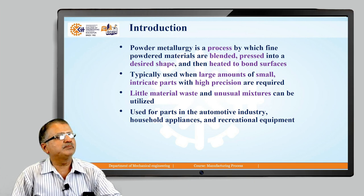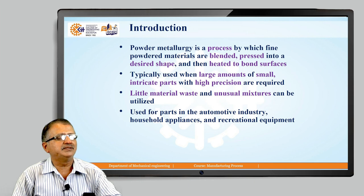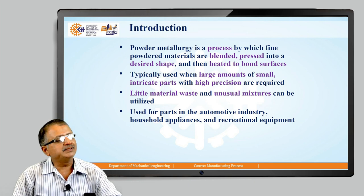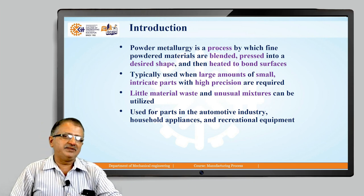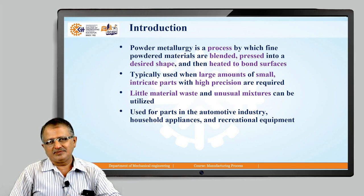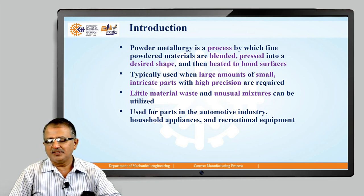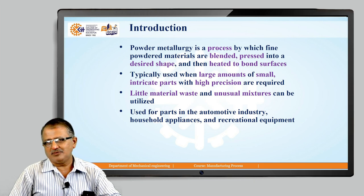As we understood in the first session, Powder Metallurgy is a process by which we produce a fine powder, and then that powder is blended, pressed into a desired shape, and heated to bond the surface. Typically, we can produce a large number of small intricate parts with high precision. There is very less material wastage and we can produce many types of materials. Powder Metallurgy is now used in many sectors, and its use is growing continually because of its unique features.